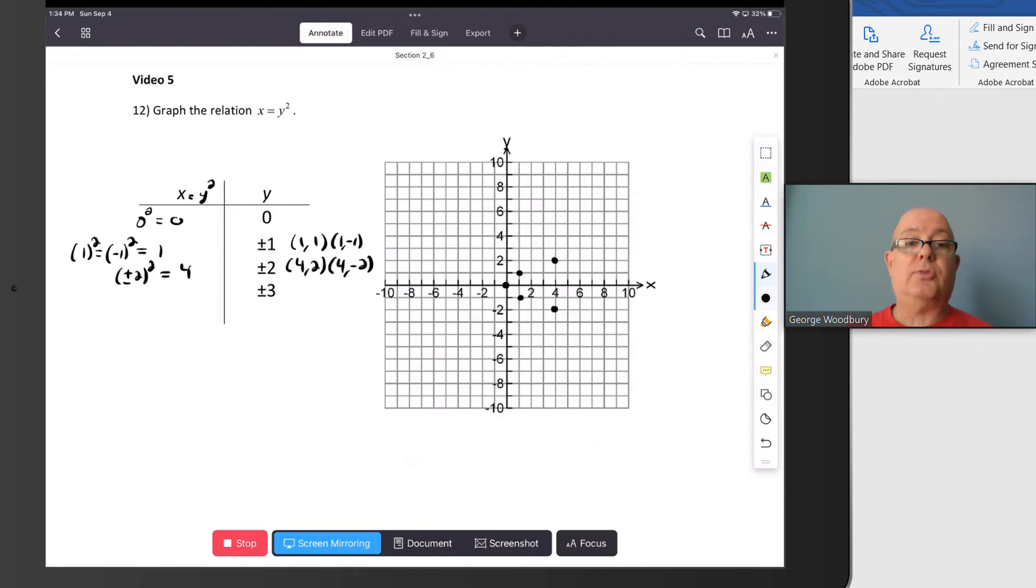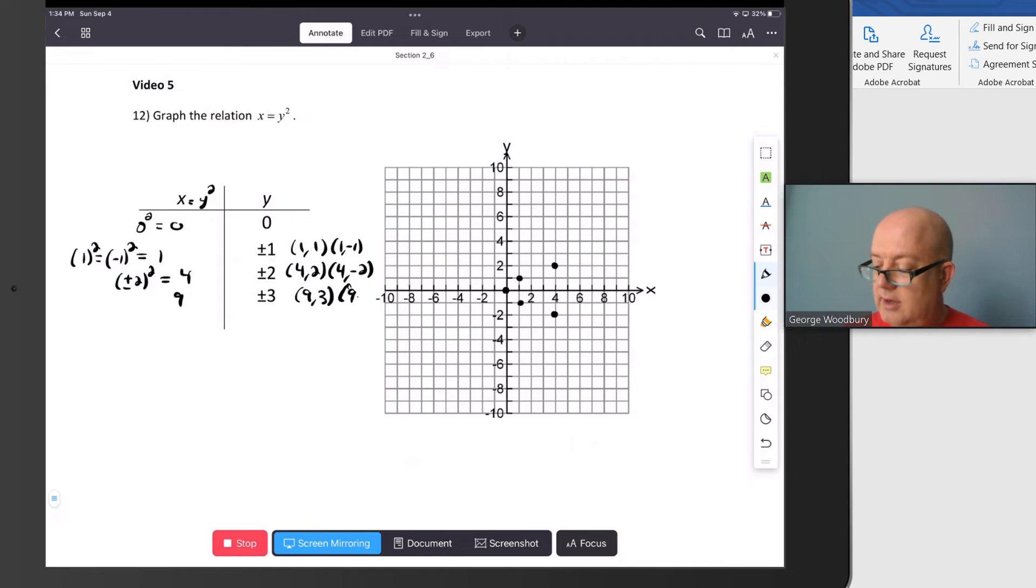And finally, with plus or minus 3, when we square that, we're going to get 9. So that's 9, 3, and 9, negative 3.